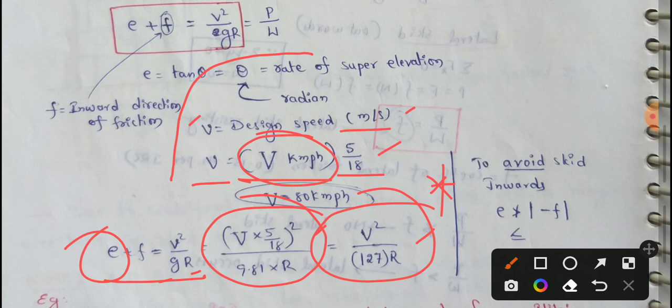This is V square by 127 into r. This formula is very very important. If we do this calculation, we will solve the question in the next video. The rate of super elevation will be a lot of questions. This is the rate of super elevation.